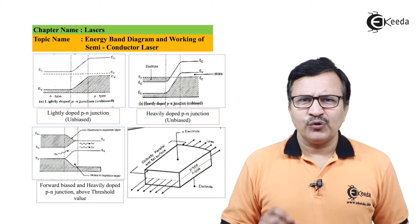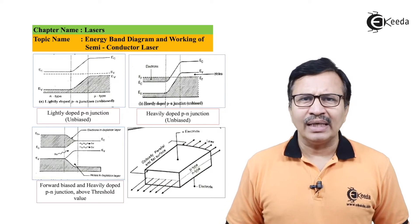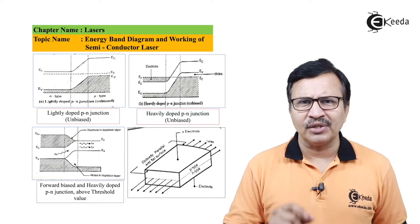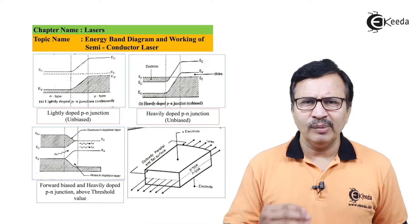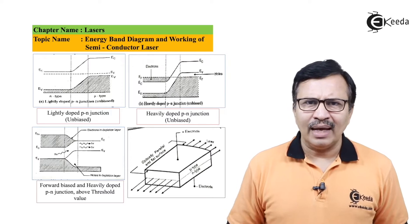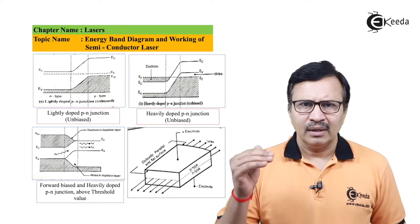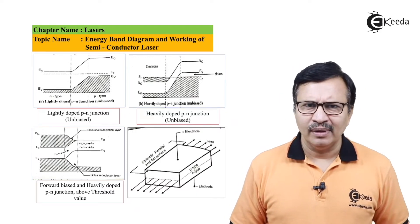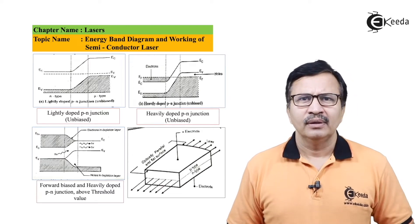A semiconductor laser is formed from semiconductors such as GaAs — which stands for gallium arsenide. We are going to make a p-n junction from this semiconductor and heavily dope it. The result of this heavy doping is that the p-region Fermi level will actually extend into the valence band, and at the same time the Fermi level from the n-region will extend into the conduction band.